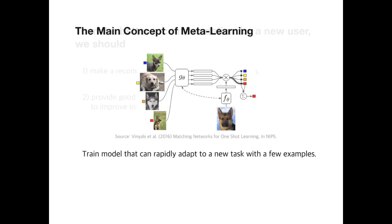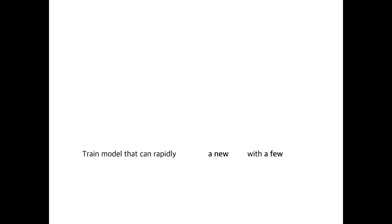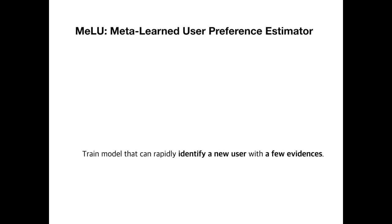To build a user preference estimation model with only a few evidence, we consider meta-learning. Meta-learning is a recent machine learning method which can rapidly adapt to a new task with a few examples. This concept can be applied directly to the user cold start recommendation. Like meta-learning, a recommender system aims to identify new users with a few evidence. We call the proposed model Malu.